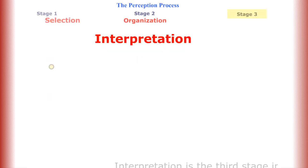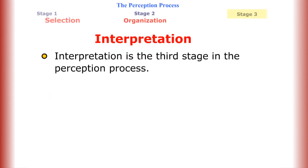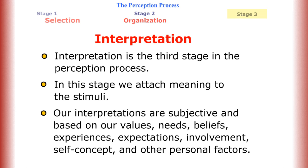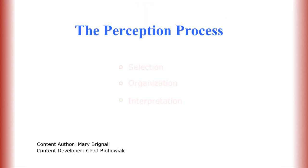Interpretation is the third stage in the perception process. In this stage, we attach meaning to the stimuli. Our interpretations are subjective and based on our values, needs, beliefs, experiences, expectations, involvement, self-concept, and other personal factors. You have completed the perception process.